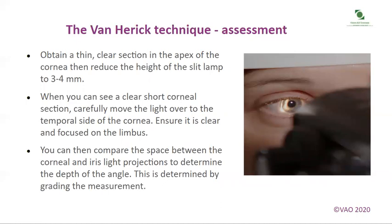For the Van Herrick technique assessment, obtain a thin, clear section in the apex of the cornea. Then reduce the height of the slit lamp to 3–4 mm. When you can see a clear, short corneal section, carefully move the light over to the temporal side of the cornea, ensuring it is clear and focused on the limbus. You can then compare the space between the corneal and iris light projections to determine the depth of the angle. This is determined by grading the measurement.